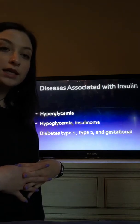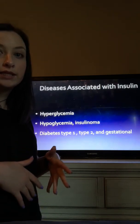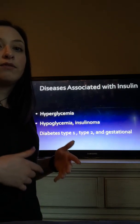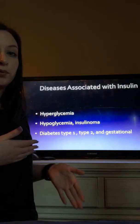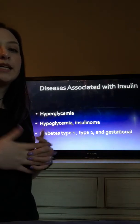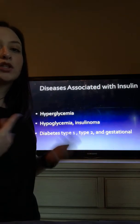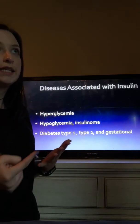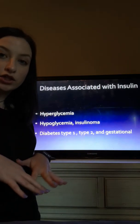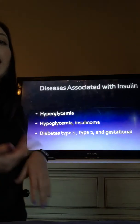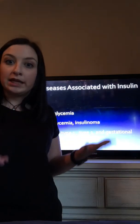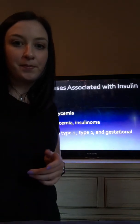Hypoglycemia is low blood sugar, which can also be a problem. Insulinoma refers to tumors in the pancreas that can cause an excess release of insulin, which can also cause a lot of trouble. Any influx or fluctuation in insulin levels can be a big issue — you need insulin to have energy, and you need energy to live. That's my presentation on insulin, thank you.